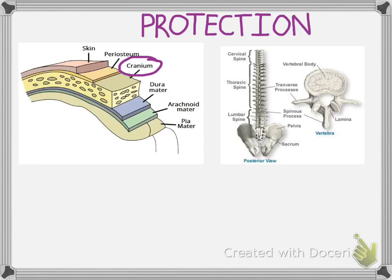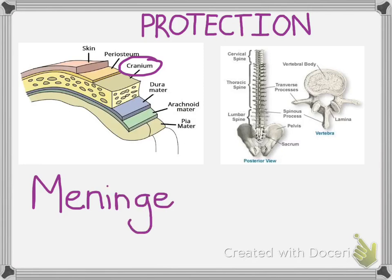Sitting just below the cranium are three meninges. You've probably heard the word meningitis — that is effectively an infection in these soft membranous layers around the brain. There are three meninges: the dura mater, the arachnoid mater, and the pia mater. The dura mater is the outermost layer up against the cranium. The arachnoid mater is just below that and is rich with blood vessels, with an almost web-like appearance. The pia mater is the delicate innermost layer.